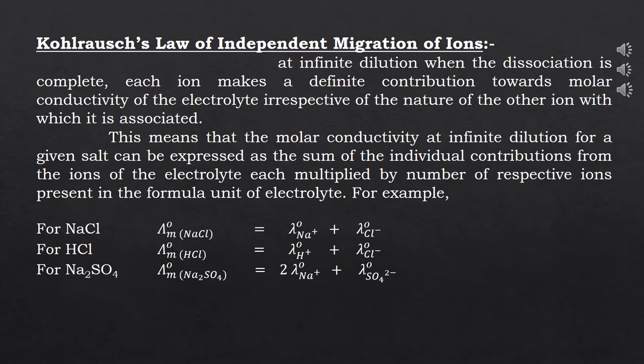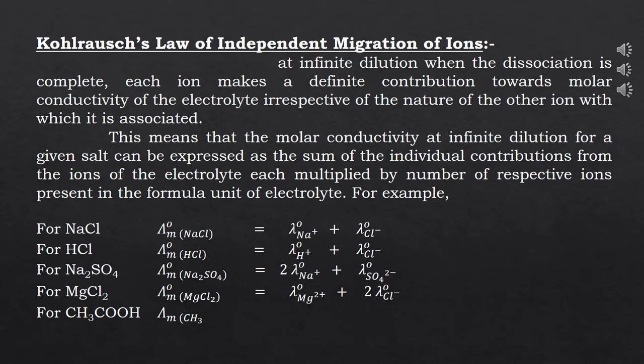For MgCl₂, that is magnesium chloride, two Cl⁻ ions are there, so λM0 for MgCl₂ is equal to λM0 for Mg²⁺ ions plus twice the molar conductance of chloride ions. And last, for acetic acid, λM0 for acetic acid is equal to λM0 for H⁺ ions plus λM0 for acetate ions.